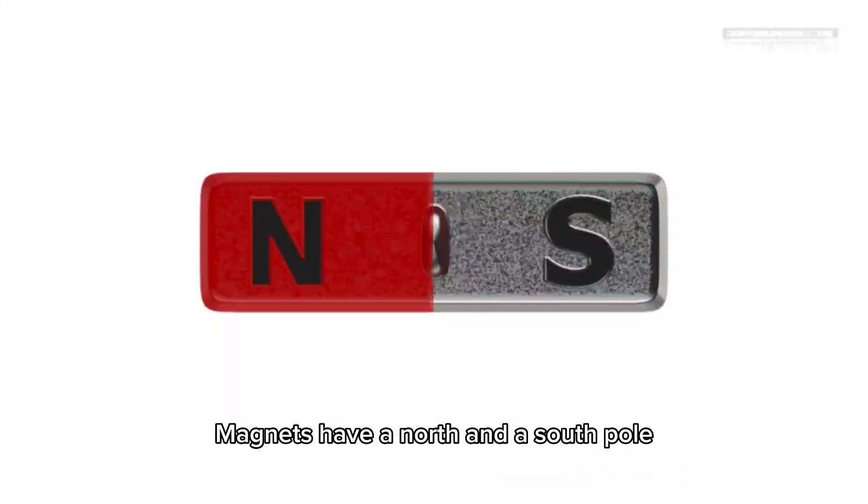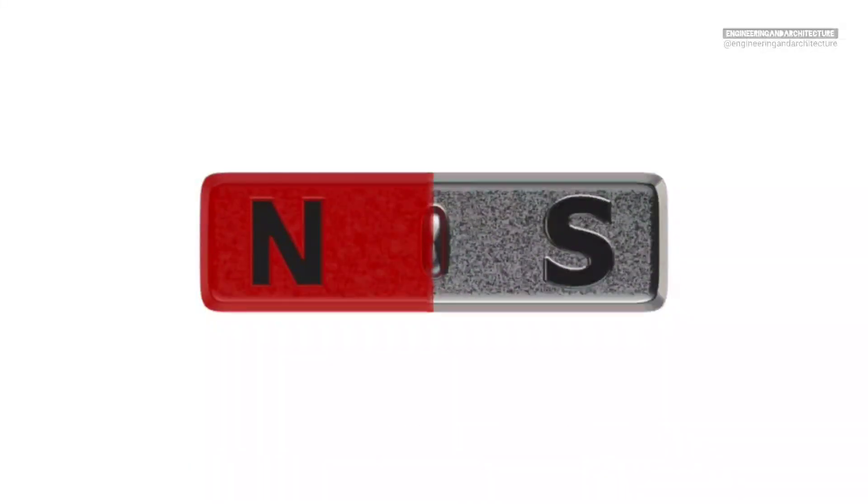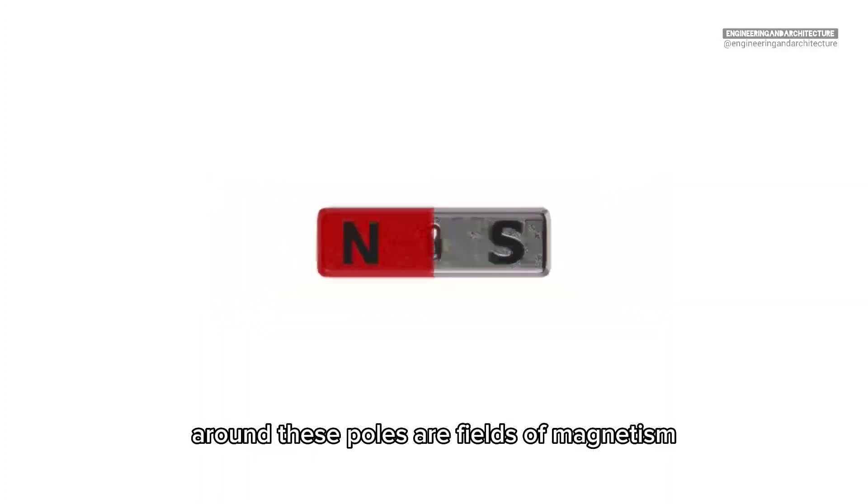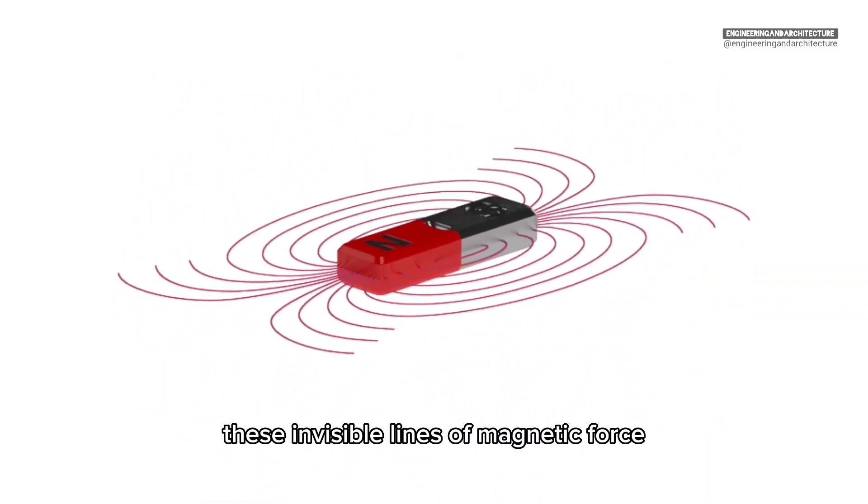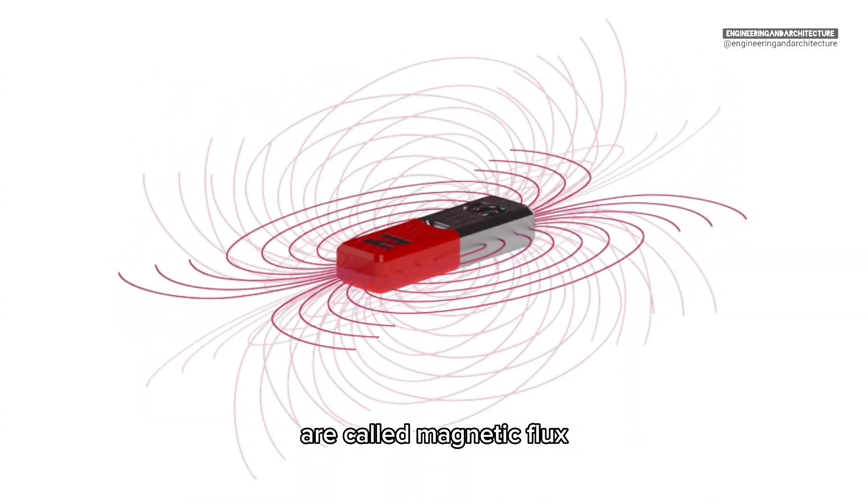Magnets have a north and a south pole. Around these poles are fields of magnetism that extend out in all directions. These invisible lines of magnetic force are called magnetic flux.